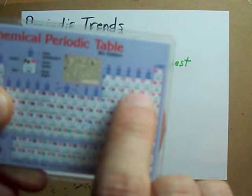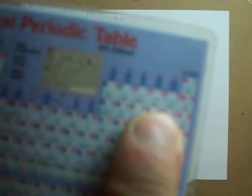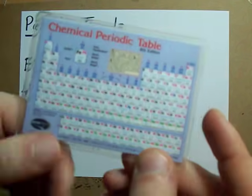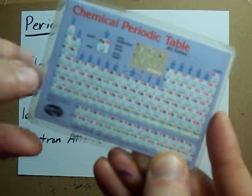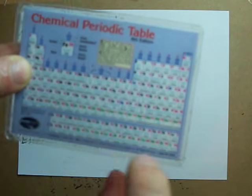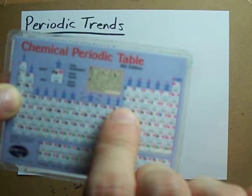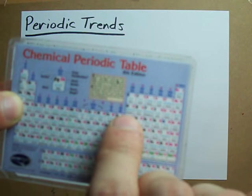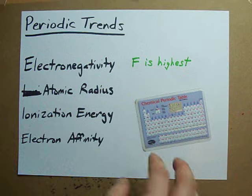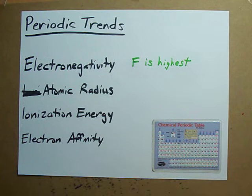F is up here in the top corner. If you're asked whether calcium or aluminum is more electronegative, the one closer to F is more electronegative. Piece of cake. You do have to know what the numbers are.